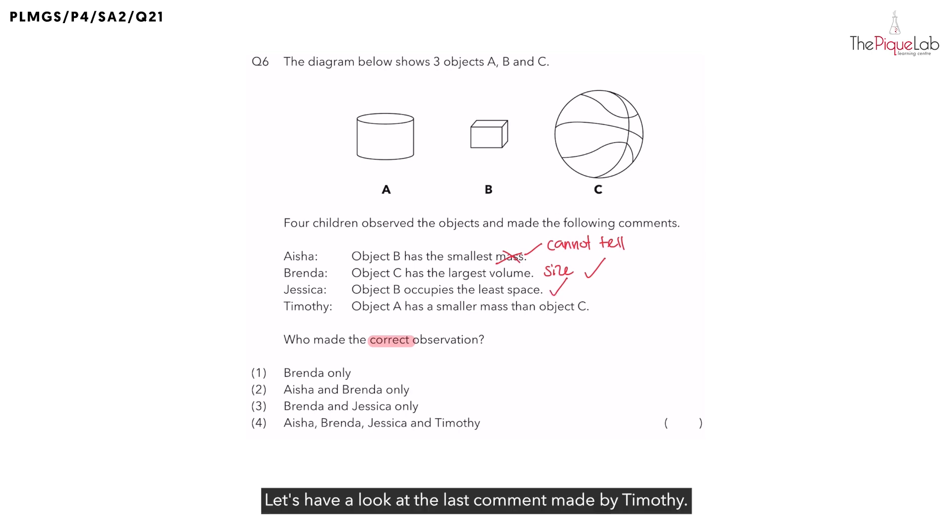Let's have a look at the last comment made by Timothy. Timothy observed that object E has a smaller mass than object C. Remember, we talked about how the mass of the objects cannot be determined based on this diagram?